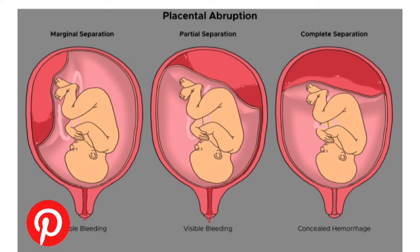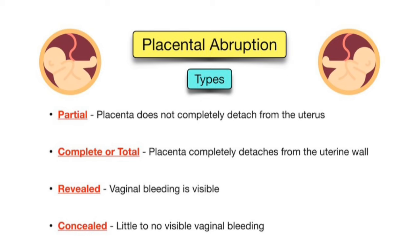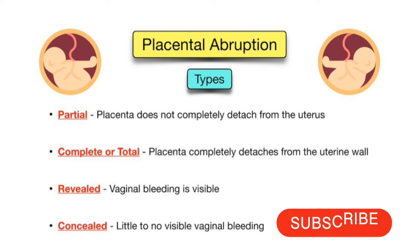An important point: bleeding in placental abruption depends on the location of the placenta in the uterus. There may be visible overflow of bleeding, or there may be no visible bleeding at all in some patients — that is, there may be concealed bleeding inside.